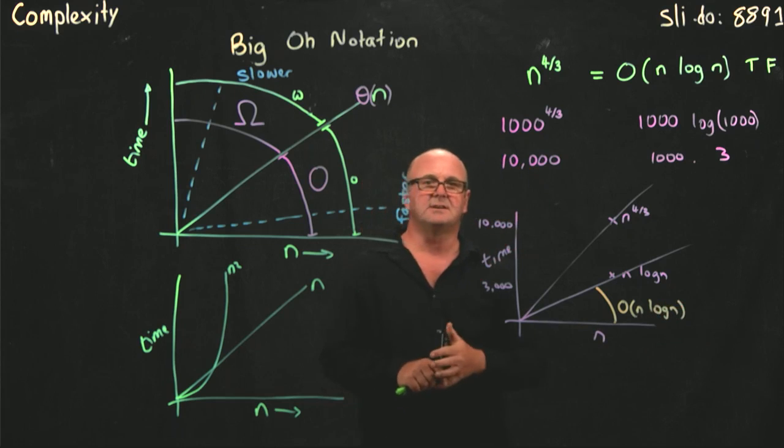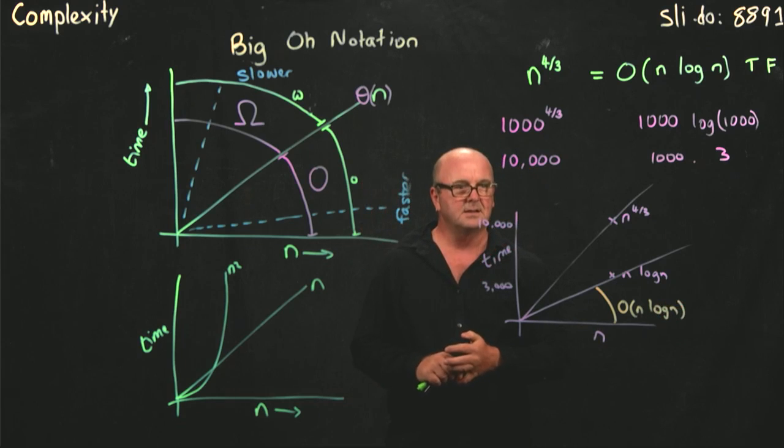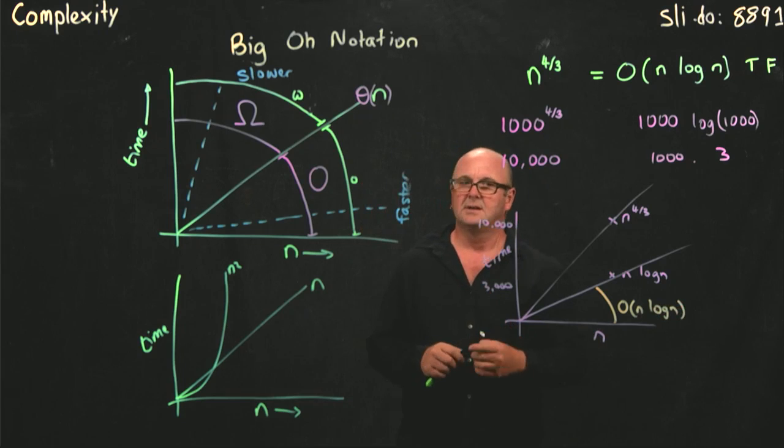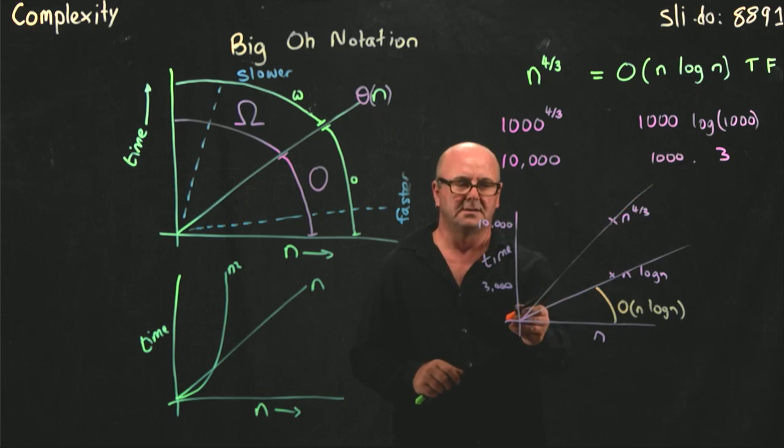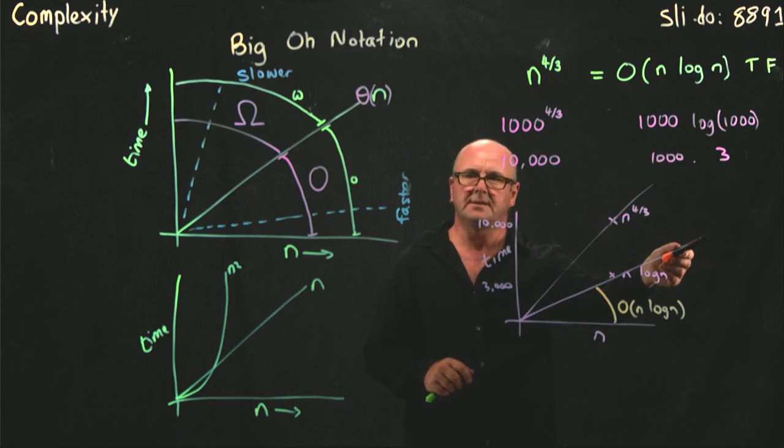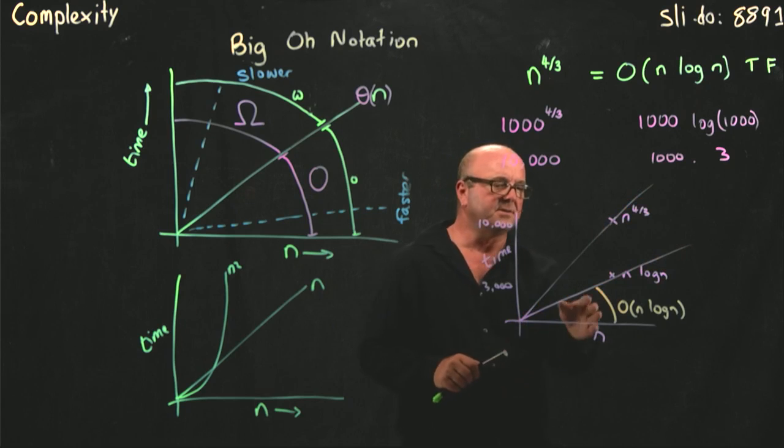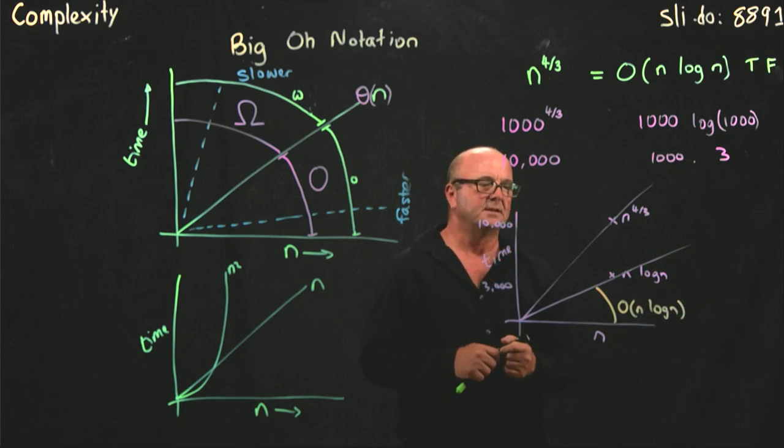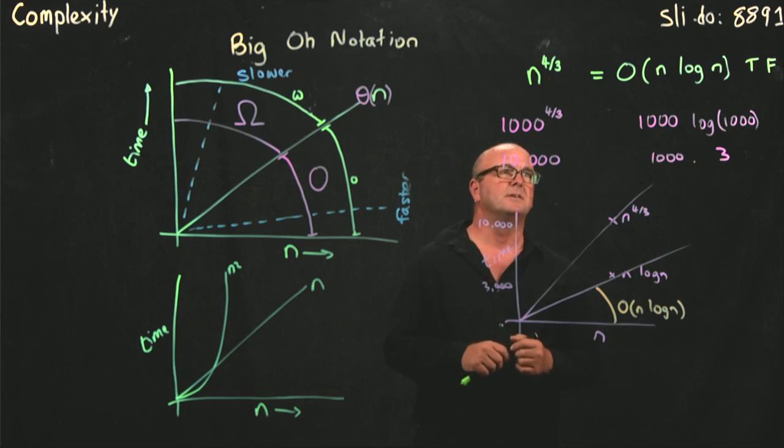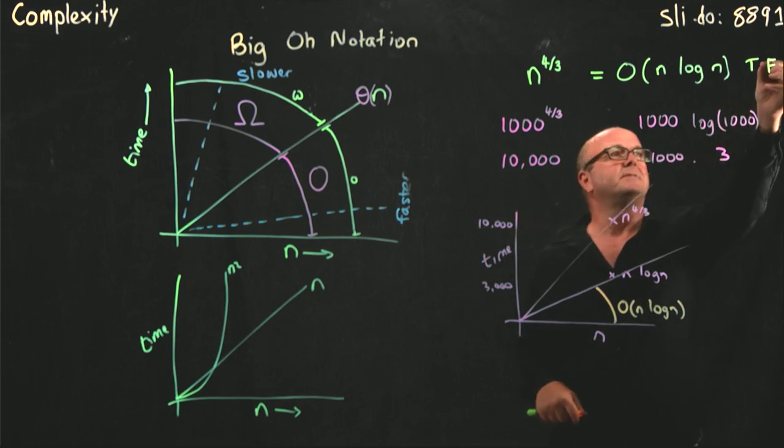So, here's our n log n line. Here's our big O of n log n. And so, what's our answer? That's false, right? n to the 4 thirds is going up here. n log n is going over here. And so, this n to the 4 thirds does not lie in our big O of n log n region. So, this one would be false.